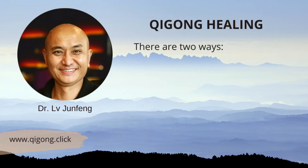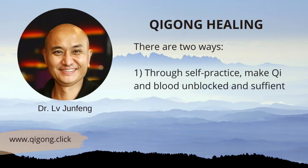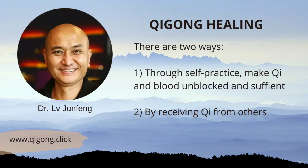As you know, there are two ways to reach the goal of curing disease in Zhineng Qigong. The first way is through self-practice — make qi and blood abundant and sufficient. The second way is by receiving the qi from others.